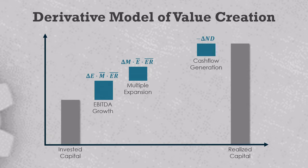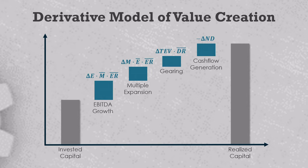But it also leaves us with a hole in our value bridge. That hole is filled by calculating the deal's gearing, which is the product of the enterprise valuation change and the average holding period debt ratio. This measures how much extra equity was gained or lost because there was debt in the capital structure — the amplification of equity gains or losses. Or in a growth deal, it measures the drag on equity value change because there's excess cash on the company's balance sheet — the dampening of equity gains and losses.